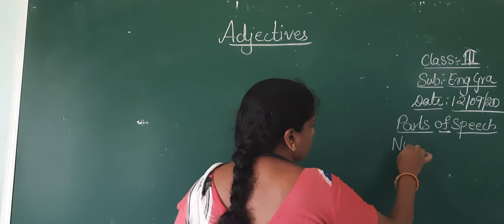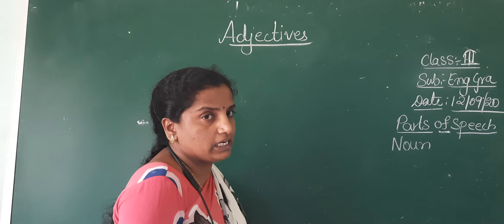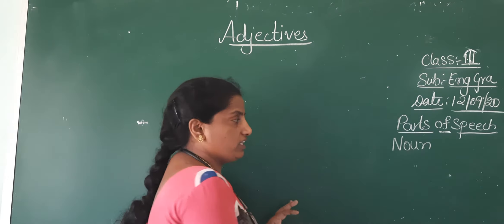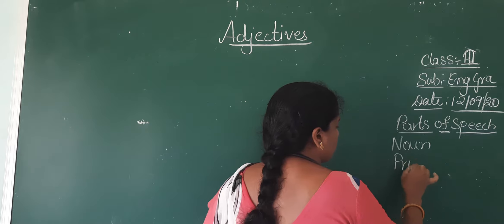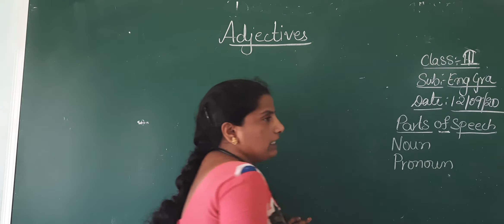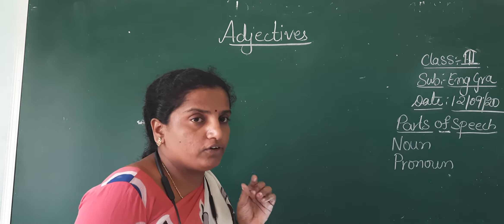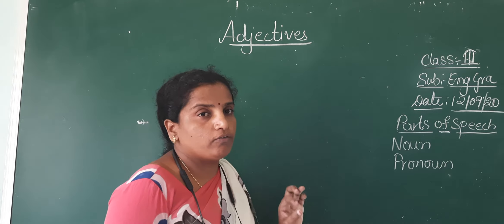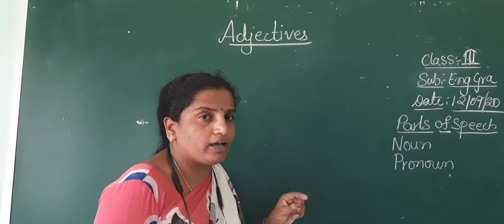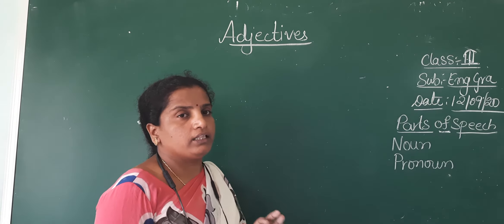The first part is noun. A noun is a naming word — it is the name of any person, any place, or anything. Next is pronoun. A pronoun is nothing but used in place of a noun. The words which are used in place of a noun are called pronouns: he, she, it, they, them, their.